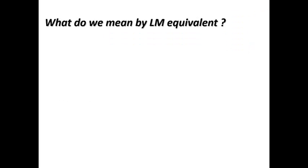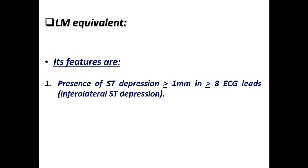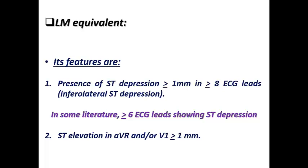ST elevation in AVR is usually part of the left main equivalent pattern on ECG. Left main equivalent means a STEMI patient with a culprit vessel being either the left main stenosis or occlusion — though left main occlusion is rare since patients typically die before reaching the ER — or combined significant LAD and LCX stenosis or occlusion. Its features are ST depression of ≥1mm in eight or more ECG leads (inferolateral ST depression) and ST elevation in AVR and/or V1 of more than 1mm. In some literature, only six ECG leads showing ST depression is enough to diagnose left main equivalent.